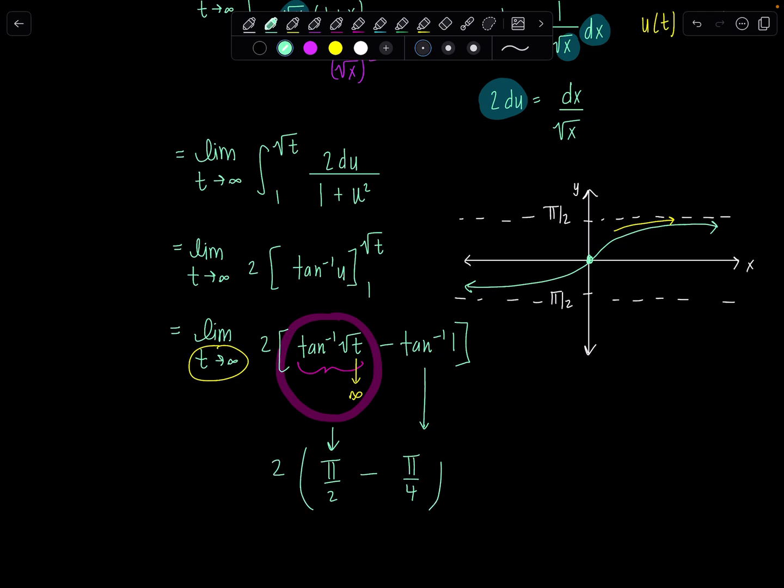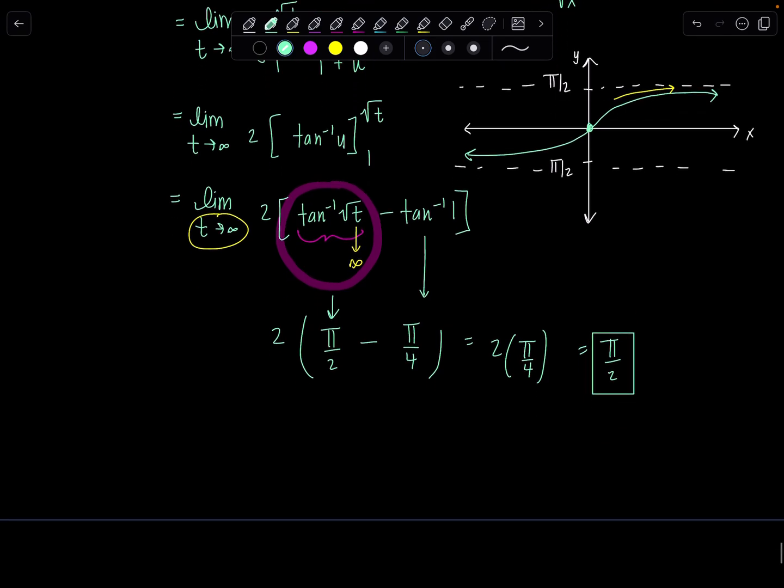Now, notice I'm not writing lim anymore because I've already evaluated the limit. And I don't even have any t's in here. So it wouldn't make sense to write limit as t goes somewhere. There's no t's. Then pi over 2 minus pi over 4. That's pi over 4. But I'm going to multiply that by 2. So my final answer is pi over 2. Voila! Which tells me the improper integral converges. Very good.